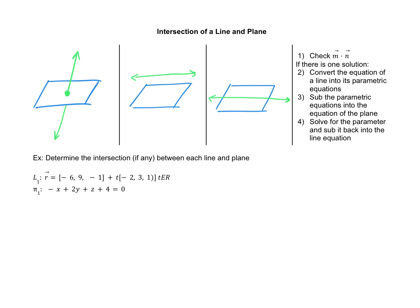It's going to start by finding the dot product between the direction vector of the line — vector m — and the normal of the plane — vector n. If you take the dot product between m and n and you do not get zero, there is one point of intersection. You have the first scenario; there is no connection between the direction vector and the normal.